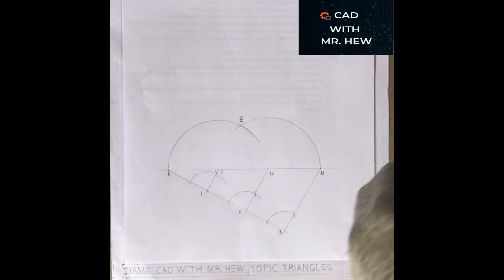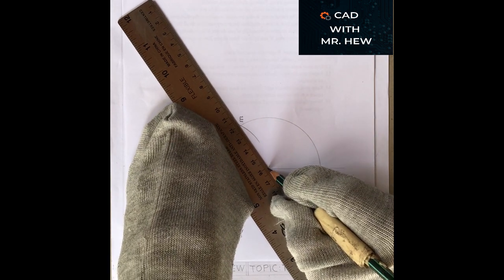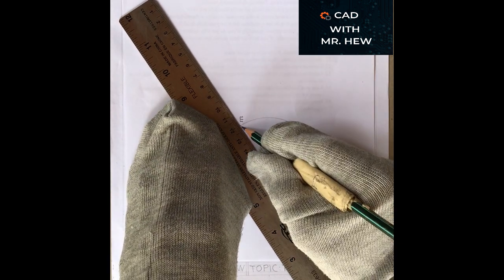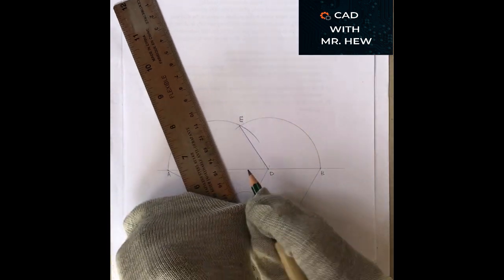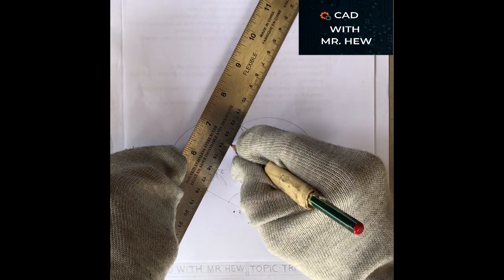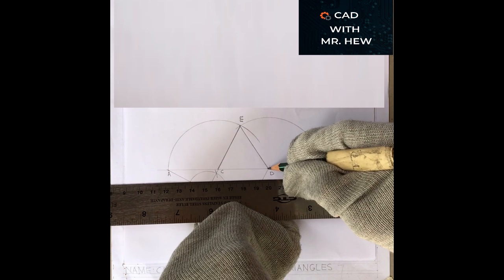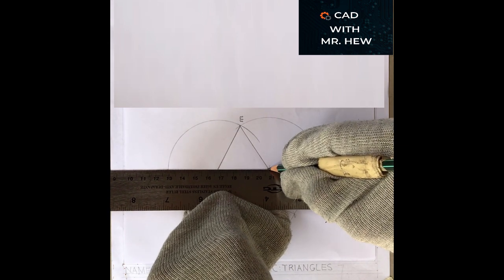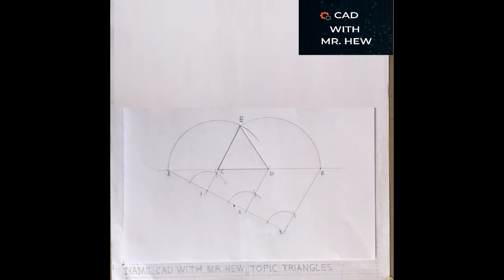We are now going to get our ruler and pencil to join from D to E, then join from E to C and from D to C. This is the equilateral triangle, given the perimeter.